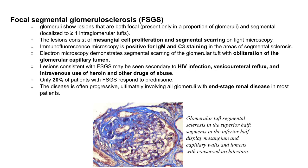Electron microscopy in FSGS demonstrates segmental scarring of the glomerular tuft with obliteration of the glomerular capillary lumen. FSGS changes may be seen secondary to HIV infection, vesicoureteral reflux, and intravenous use of heroin and other drugs of abuse. Only 20% of patients with FSGS respond to prednisolone. The disease is often progressive, ultimately involving all glomeruli with end-stage renal disease in most patients.